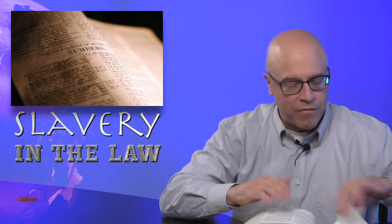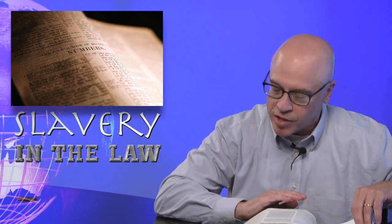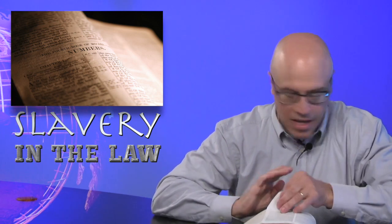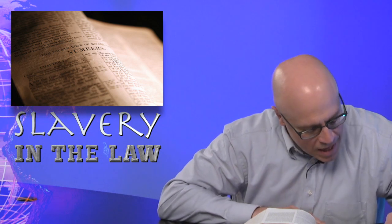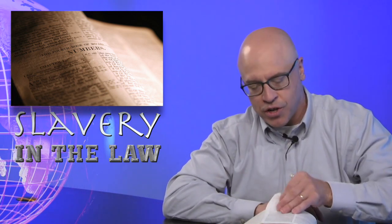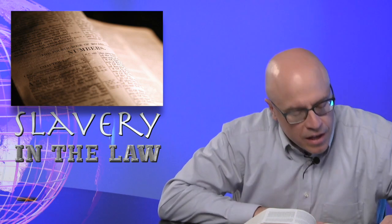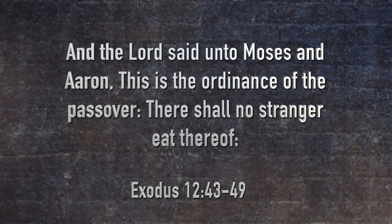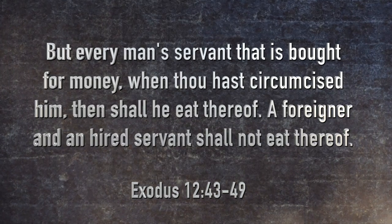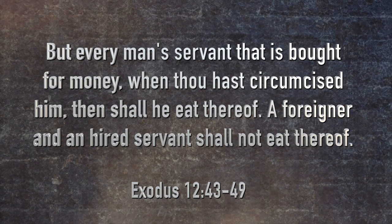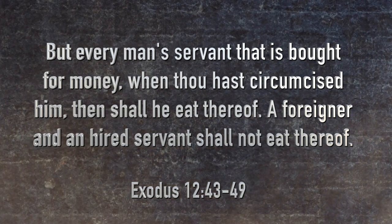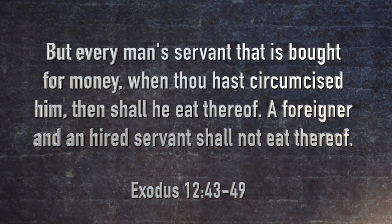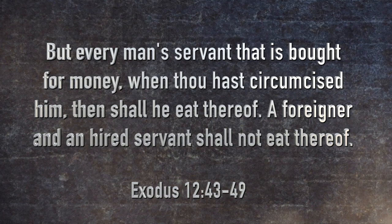Notice this in Exodus, dealing with one of the big holy day seasons for the Israelites. Exodus chapter 12, beginning in verse 43. It says, And the Lord said unto Moses and Aaron, This is the ordinance of the Passover. There shall no stranger eat thereof - again, making a distinction between those who are Israelites and those who are not. But verse 44: But every man's servant that is bought for money - this could be a slave, folks - When thou hast circumcised him, then shall he eat thereof.